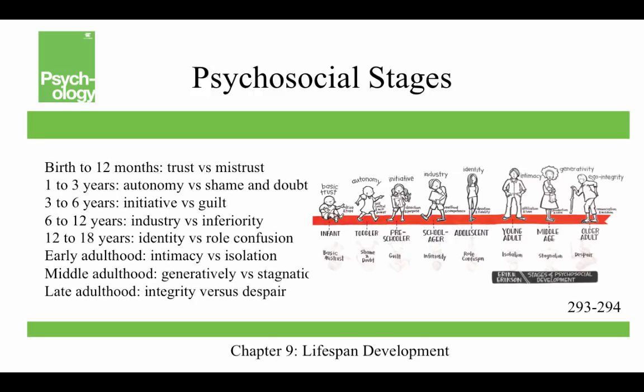Erikson's psychosocial stages: birth to 12 months is trust versus mistrust — is the world a safe, predictable place? Ages one to three is autonomy versus shame and doubt, when children strive to establish independence. Preschool ages three to six is initiative versus guilt. The school years bring industry versus inferiority, where children compare themselves to peers. The teen years, 12 to 18, is identity versus role confusion, where children develop a sense of self.